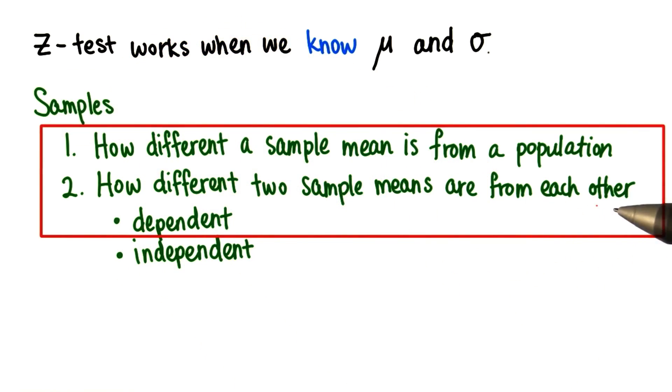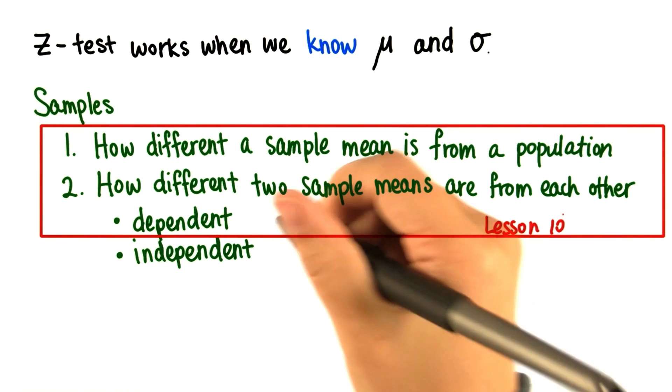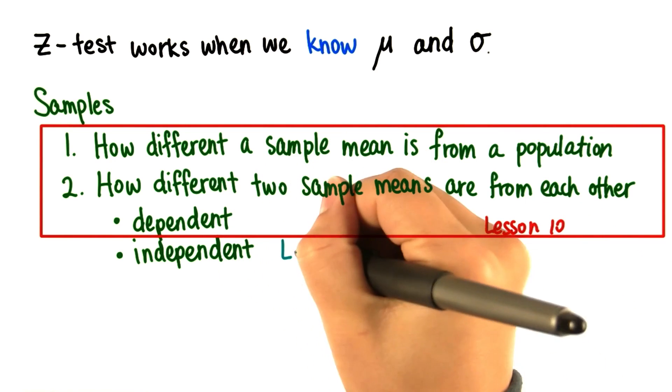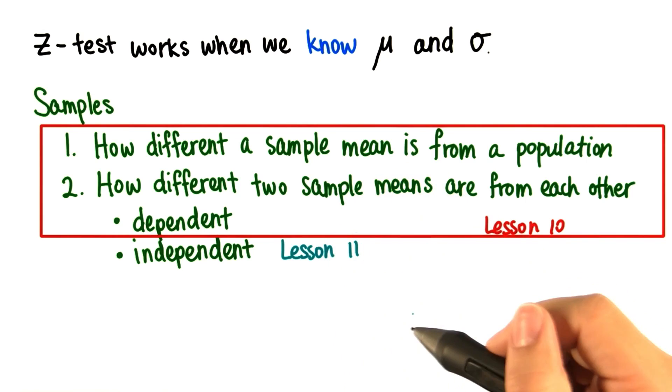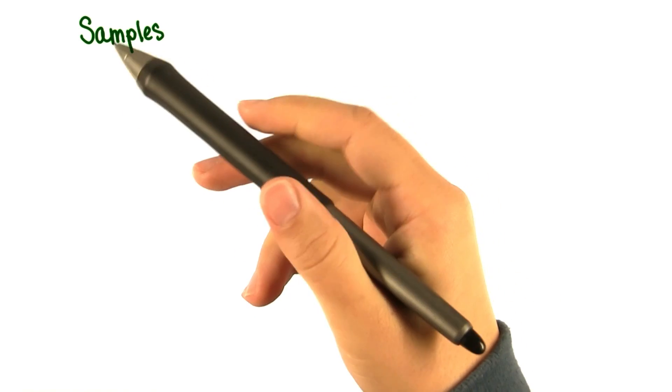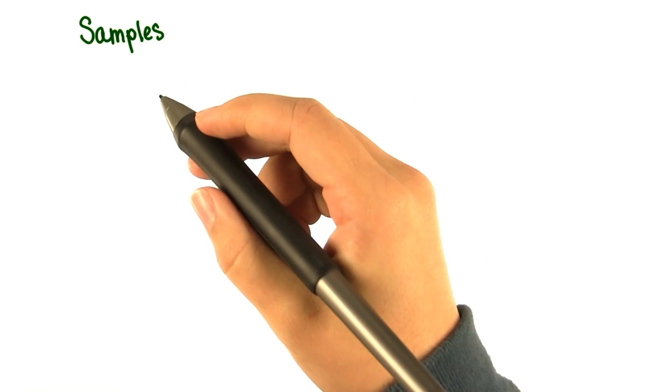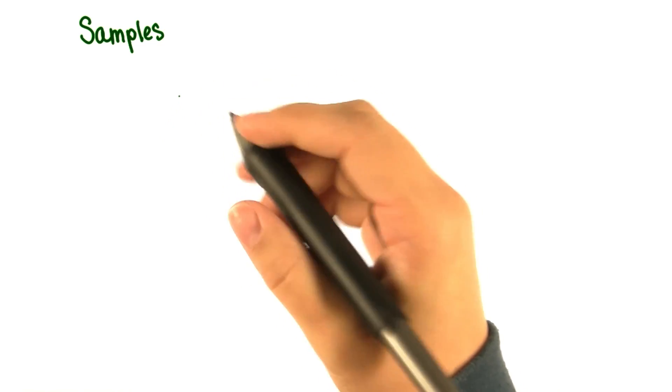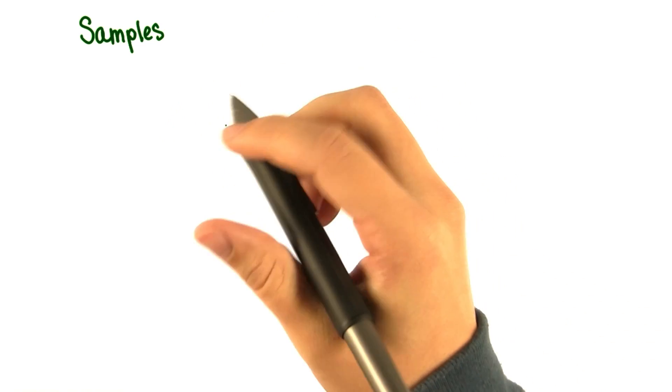In lesson 10, we're going to look at these. And then in lesson 11, we'll look at independent samples. It's going to be fun. When we work with samples, we have to estimate the population standard deviation using the sample standard deviation with Bessel's correction.